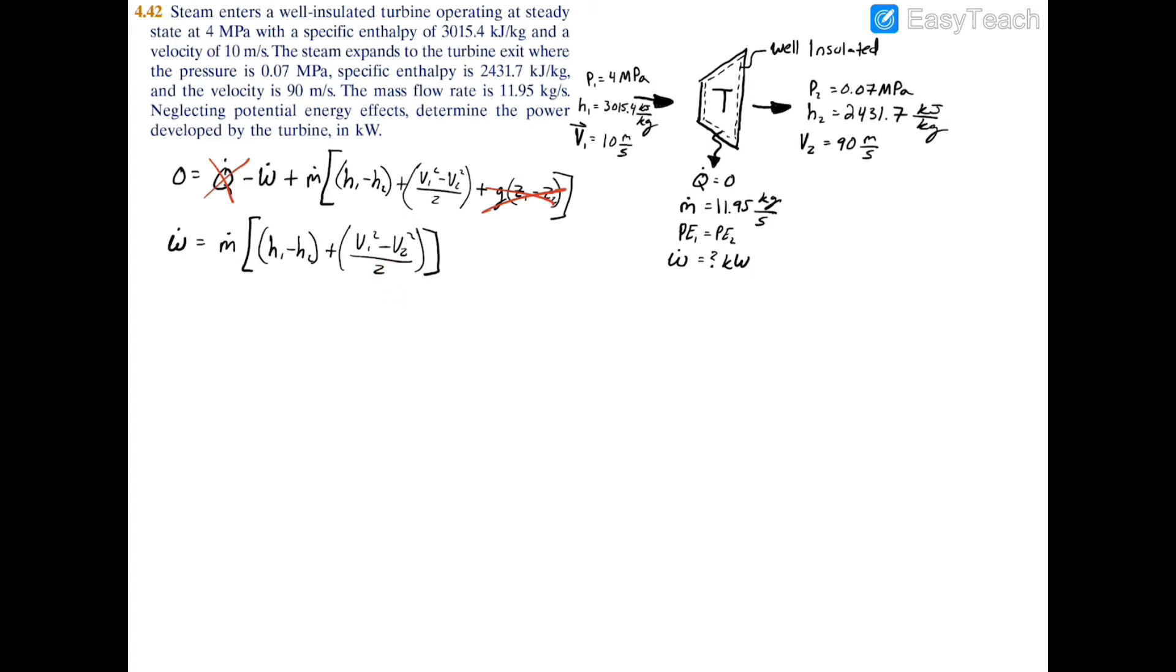So now let's try to plug and chug what we have. So we'll have that the power equals 11.95 kilograms per second times the difference of enthalpy, which is 3015.4 minus 2431.7. Both of those are in kilojoules per kilogram.